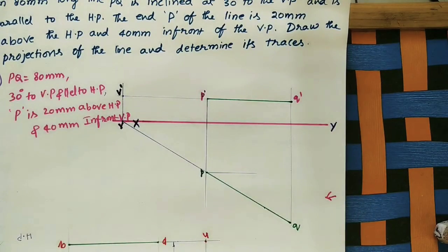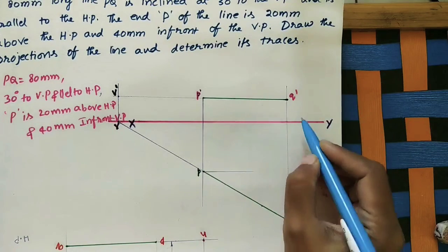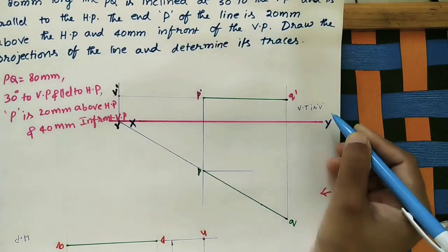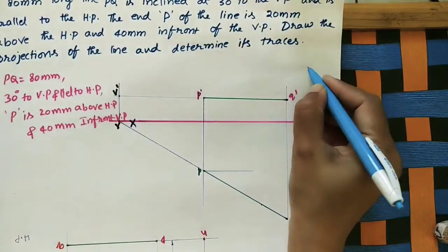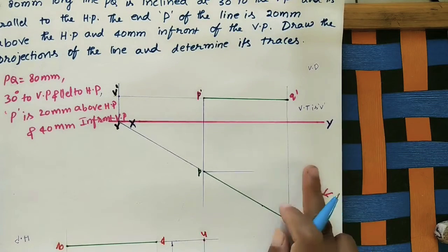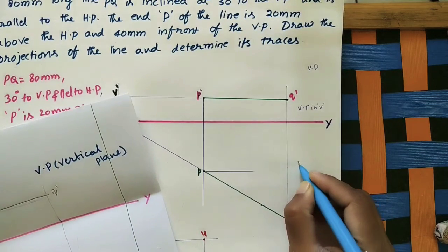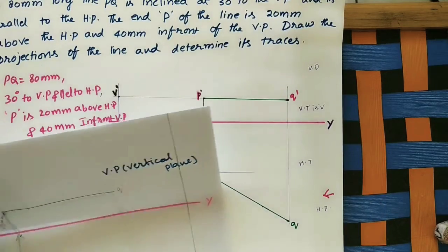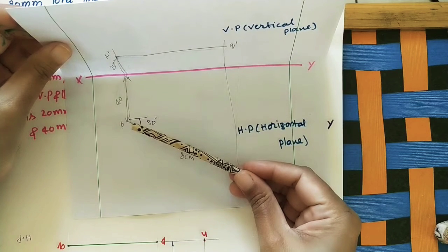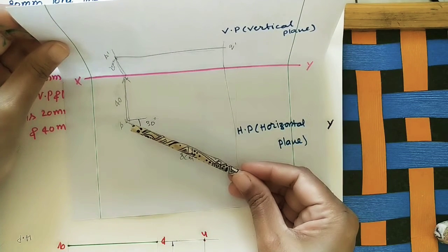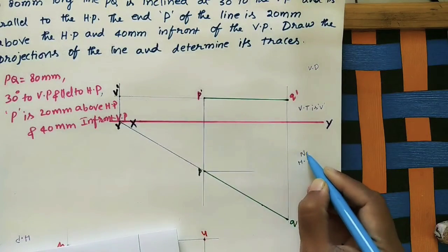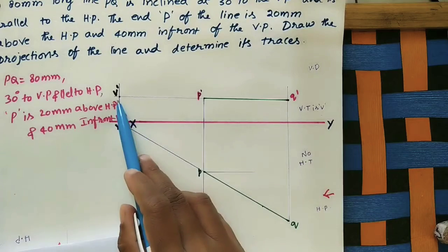The vertical trace is denoted by VT, which is v-dash, because above the XY line is the vertical plane and below is the horizontal plane. The line is parallel to the horizontal plane, so there is no intersection point with the horizontal plane — therefore there is no horizontal trace. We write: VT = v-dash, no HT.